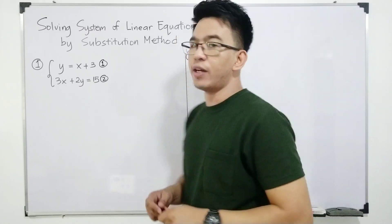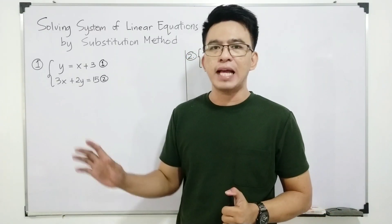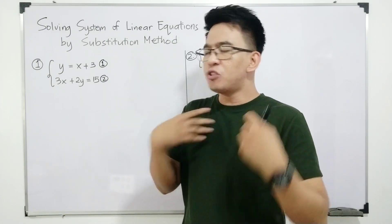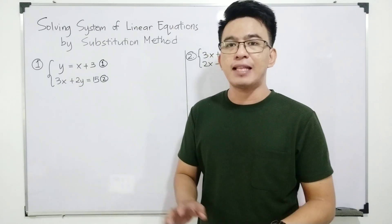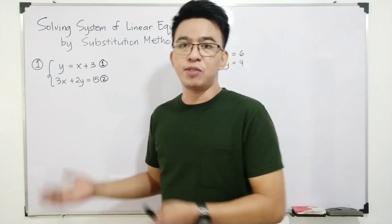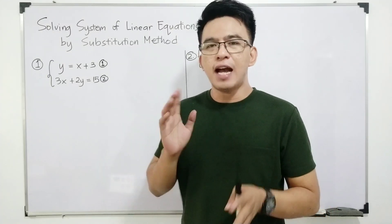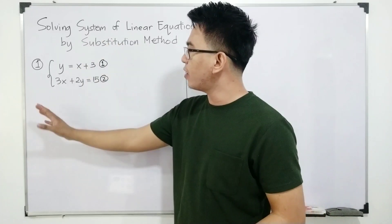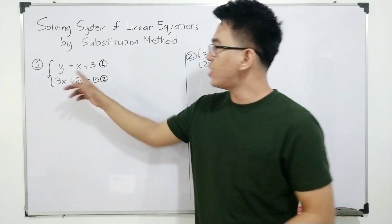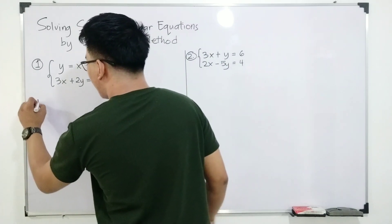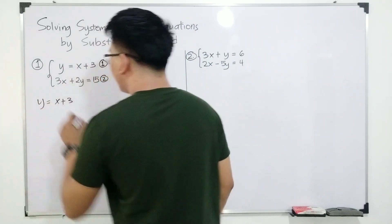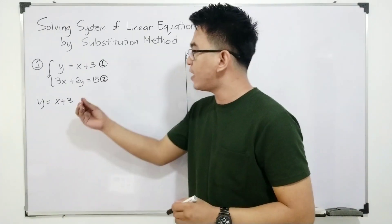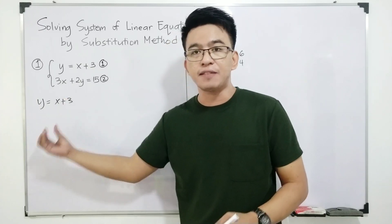The first thing you need to do is to choose the simplest equation. Our target here is to solve for a temporary value of x or y to use for substitution. The clue is to look for a variable with a coefficient of 1. In our equation, equation number one is ready — y = x + 3 — because the y variable is already isolated, making it easier to substitute.